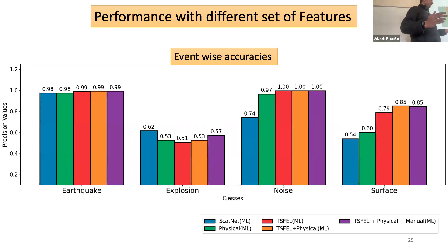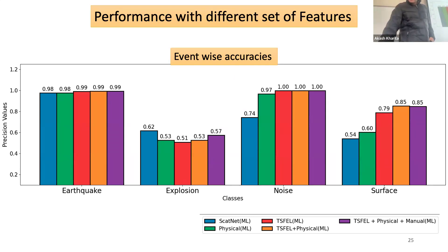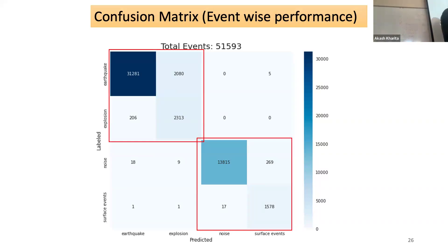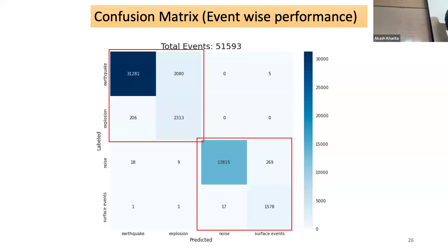The overall conclusion is TSFPL features perform much better than physical features. When we consider results from several stations and average them out, we get much better results. The confusion matrix shows the main confusion occurring between earthquakes and explosions, and between surface events and noise.